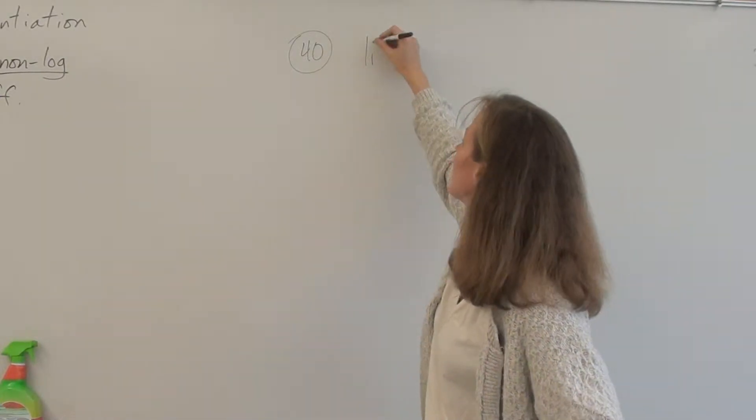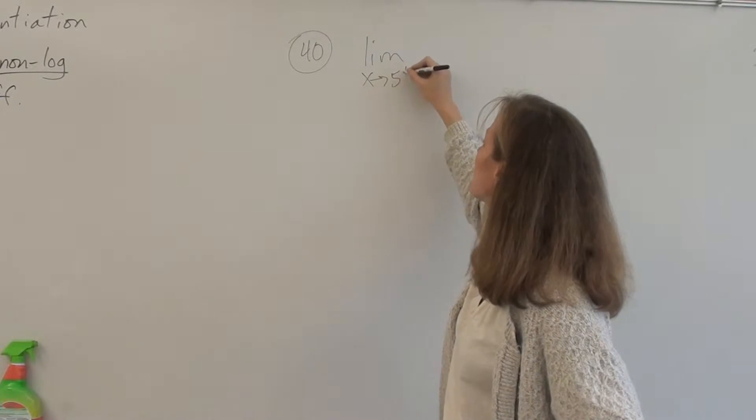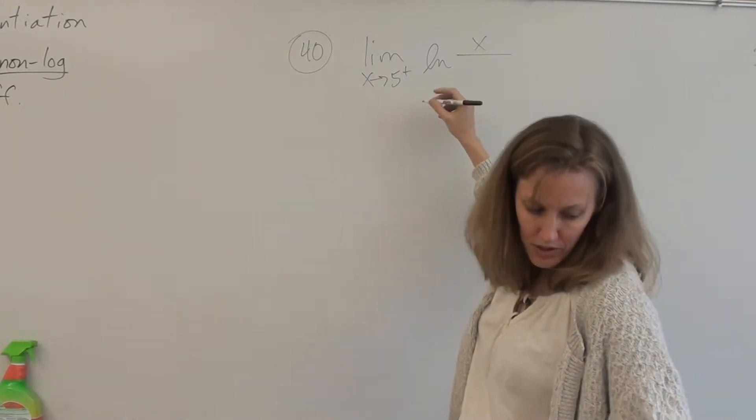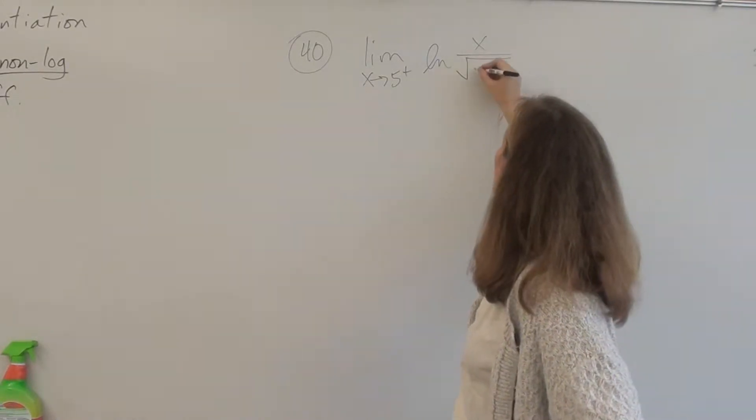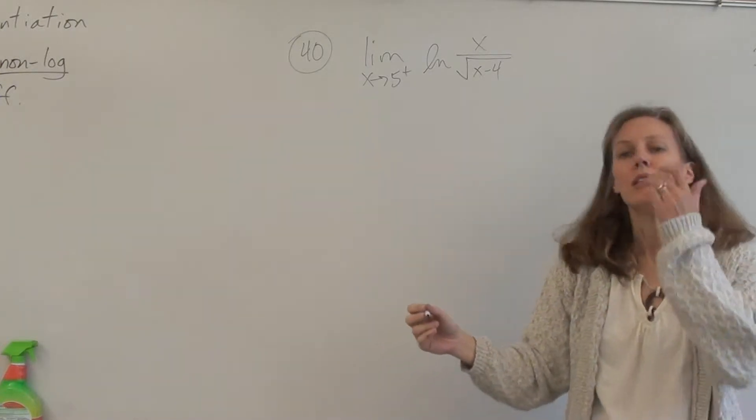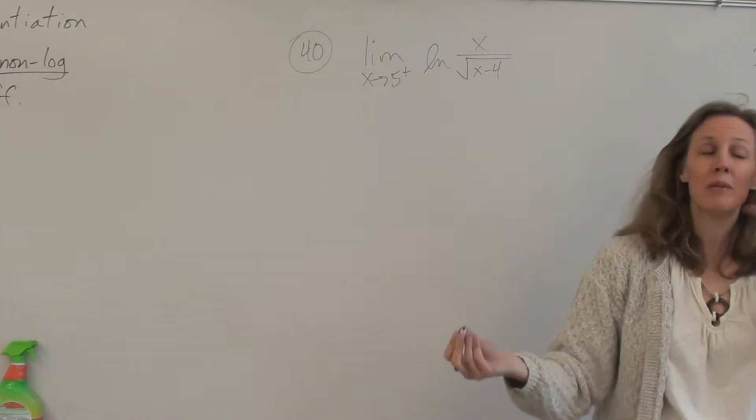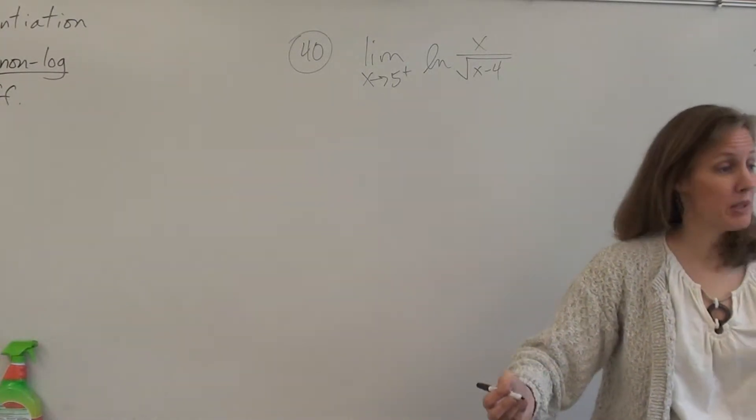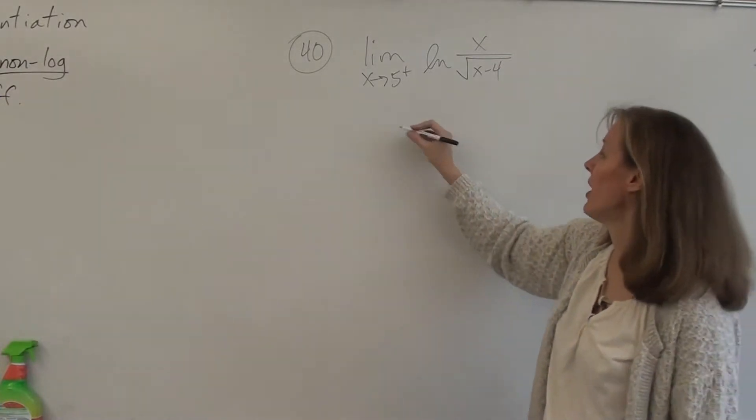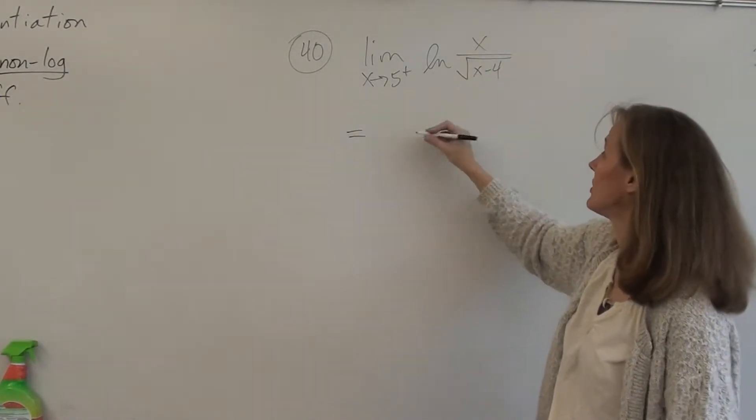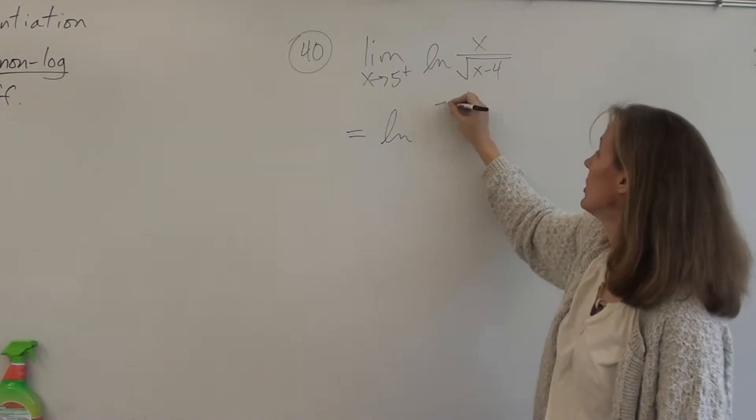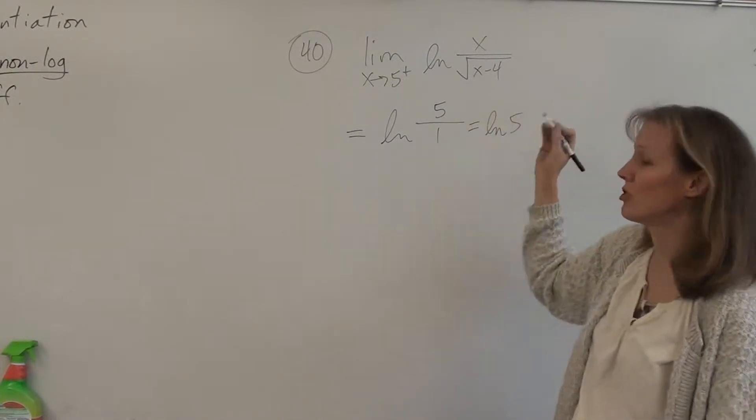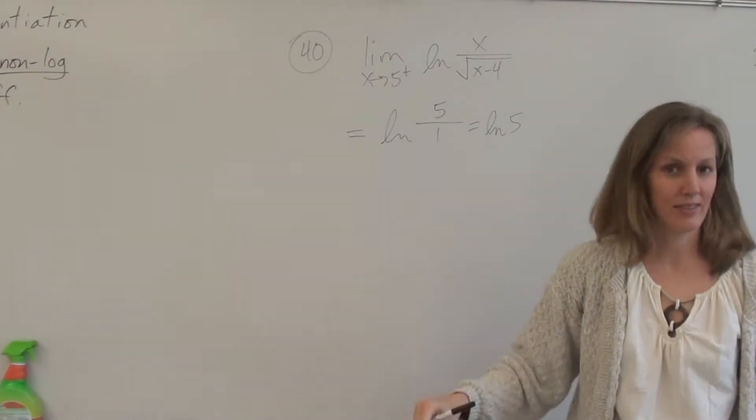So this is a limit as x approaches 5 from the right of the natural log of x over the square root of x minus 4. The limit as x approaches 5 from the right is the same as the limit as x approaches 5, right? If you find the limit as x approaches 5, it has to be the same from the right and the left. So always, for every limit, you always start by plugging the 5 in and just see if you get a valid answer. So the limit, it's the natural log of 5 over 1, which is just ln 5, and you're just done. Ta-da!